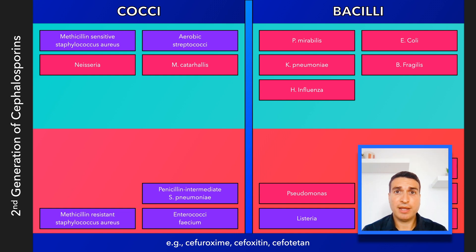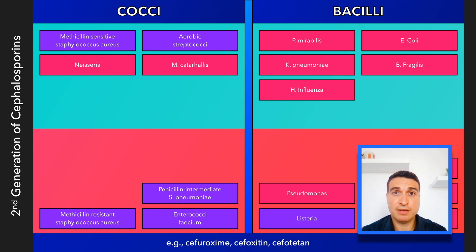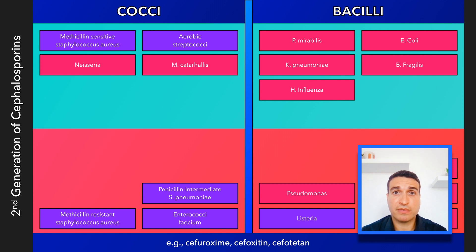Let's pause and go over some of the more important concepts. Recall that the first generation of cephalosporins provides good coverage against most gram-positive organisms and some gram-negative enterics. The second generation builds on this by improving activity against gram-negatives. Cefuroxime, in particular, provides better coverage against Haemophilus influenzae, while cefotetan and cefoxitin provide coverage against Bacteroides fragilis.